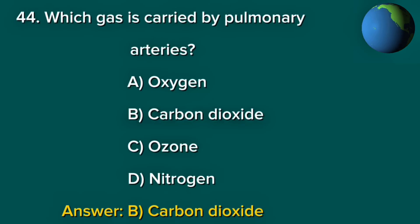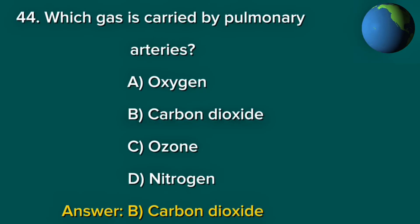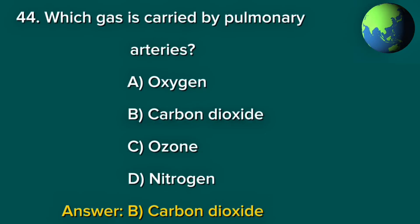Question 44. Which gas is carried by pulmonary arteries? A. Oxygen. B. Carbon dioxide. C. Ozone. D. Nitrogen. Answer: B. Carbon dioxide.